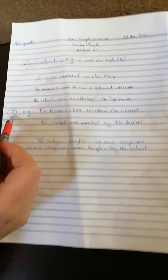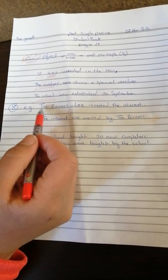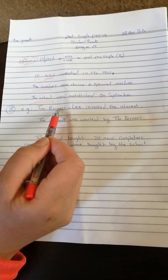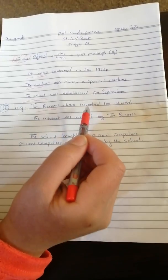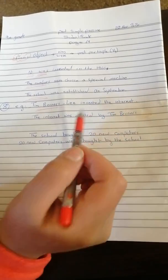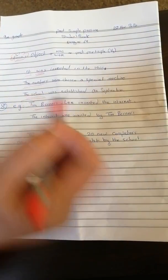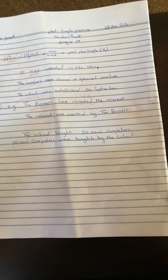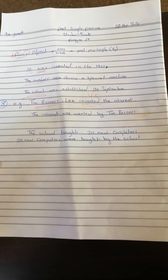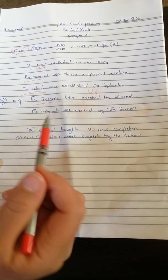Now look at these active sentences. Tim Berners Lee, this is a subject. Tim Berners Lee invented the internet. Now this active sentence is simple past. When I want to make it a passive sentence...